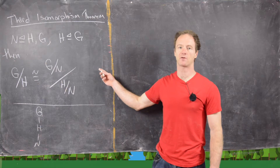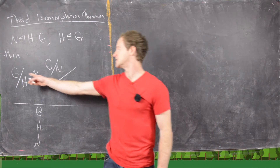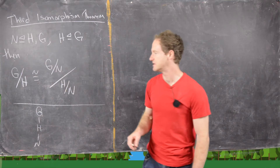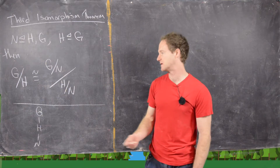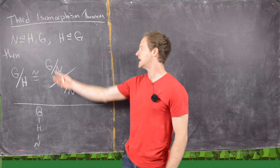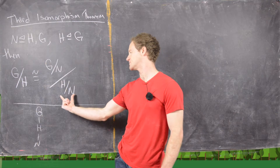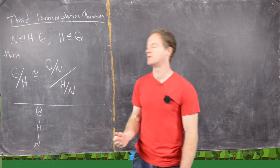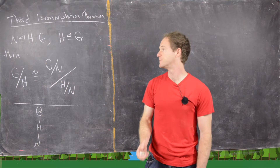So our result is the following: G mod H is isomorphic to (G mod N) mod (H mod N). Underlying this, we have that H mod N is naturally a normal subgroup of G mod N.